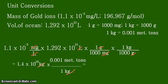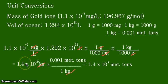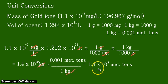The answer is 1.4 times 10 to the positive 7 metric tons. We simply multiply the kilogram answer by 0.001, moving the decimal point three places, giving 1.4 times 10 to the 7. So the mass of gold ions in the ocean is 1.4 times 10 to the 10 kilograms, or 1.4 times 10 to the 7 metric tons. That's all for this video — thank you for listening and continue learning.